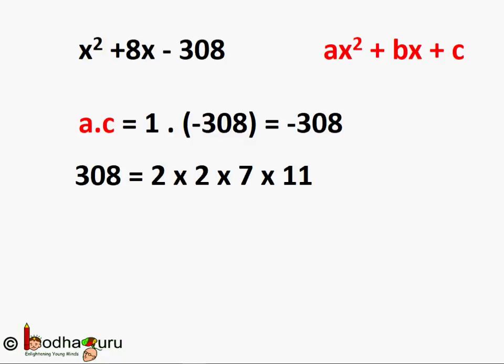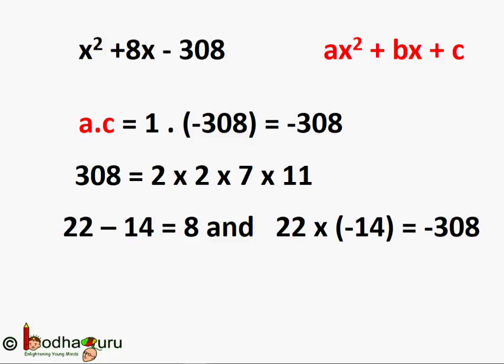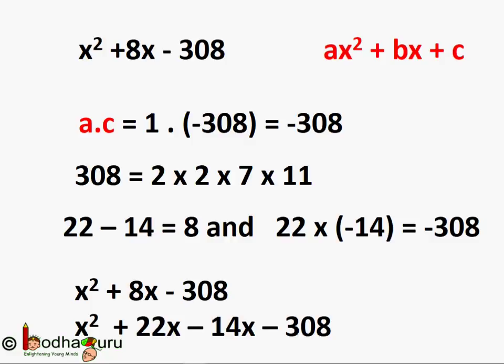308 is a big number, so we can do prime factorization to find its factors and make things easier. 308 = 2 × 2 × 7 × 11. So we can say 2 × 7 = 14 and 2 × 11 = 22. Then 22 − 14 = 8 and 22 × (−14) = −308.